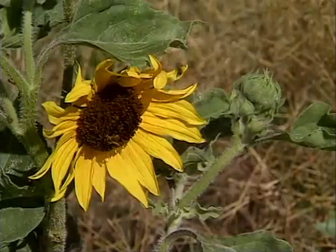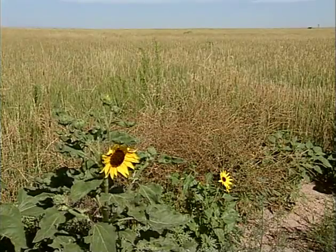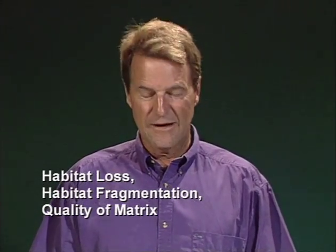We sometimes tend to think of edge-generalist species as just things like robins, magpies, and cowbirds, but they're also plants. Once you've disturbed a landscape and created an edge — bladed a road, built a house, cut a field — you see invasive species thriving in that disturbed area. If you're concerned about natural ecosystems, we're concerned about those communities of native plants, native insects, and these invasive species can result in the decline of those.